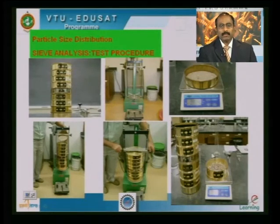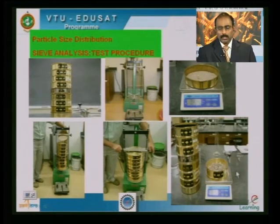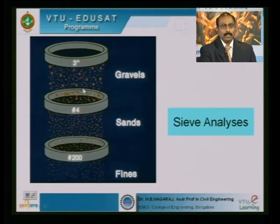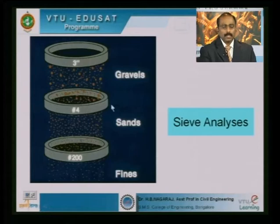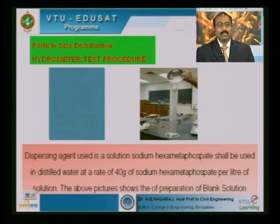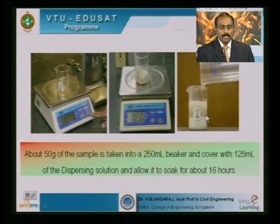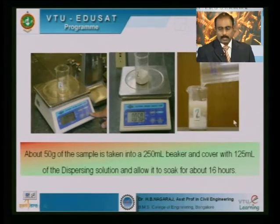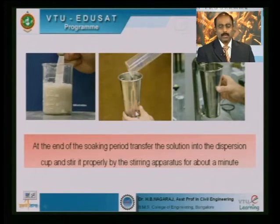After sieve analysis, we weigh the individual masses retained on each sieve. Higher-size particles are retained on bigger sieves, sands are placed below gravels, and fines come still lower. The finer portion that cannot be determined from sieve analysis can be done by conducting a hydrometer sedimentation analysis — either using a hydrometer or a pipette analysis.